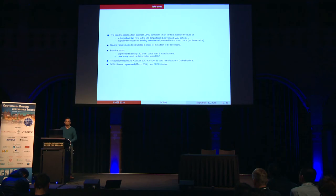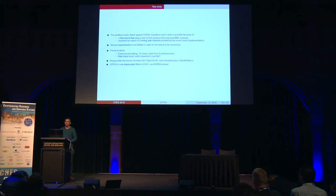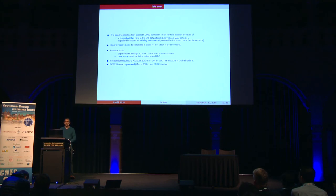To summarize, we have shown that the Padding Oracle attack against SCP-02 is possible for two reasons. The first is theoretical and lies in the way the protocol is designed — more precisely, in the encrypt-then-MAC scheme. The second reason, very likely, is related to the way the protocol is implemented in the smart cards. Of course, several requirements must be fulfilled for an attacker to be successful, and in particular, the attacker must be able to discriminate between the response times sent by the card. In practice, we have shown in an experimental setting that different models of smart cards can be attacked. We have informed the card manufacturers we tested and also Global Platform, which is in charge of the protocol. While this paper was under submission, SCP-02 has been deprecated by Global Platform, and what is now recommended is to use SCP-03 instead. This concludes my talk — thank you, and I'm willing to answer any questions.